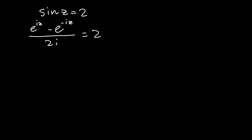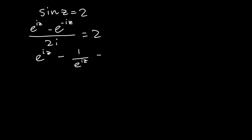And that is still going to be equal to 2. Now I'll take this 2i across and I'll be left with e to the iz minus 1 over e to the iz. I can write it as 1 over because e to the negative iz has a negative in the exponent, so I can take it to the denominator. Multiplying 2 by 2i gives 4i.